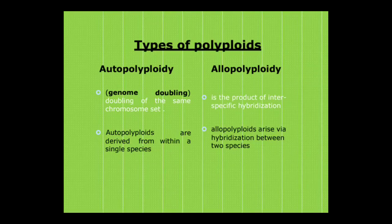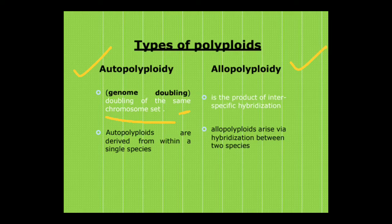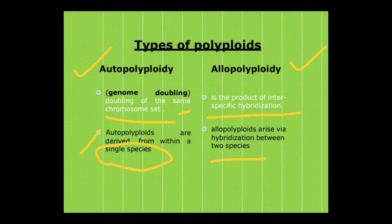What are the different types of polyploid? Autopolyploidy and allopolyploidy. In autopolyploidy, genome doubling occurs — doubling of the same chromosome set — and autopolyploids are derived from within a single species. Whereas in allopolyploidy, it is the product of interspecific hybridization, and allopolyploids arise via hybridization between two different species.